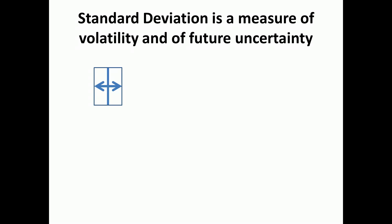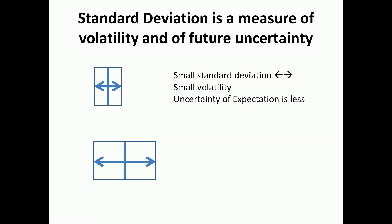We assume that this uncertainty will prevail in the future as well — the future will be at least as uncertain as the past. Now if we take another average where the standard deviation is so large that there's a wider spread in possible returns, the uncertainty associated with that average is much higher.